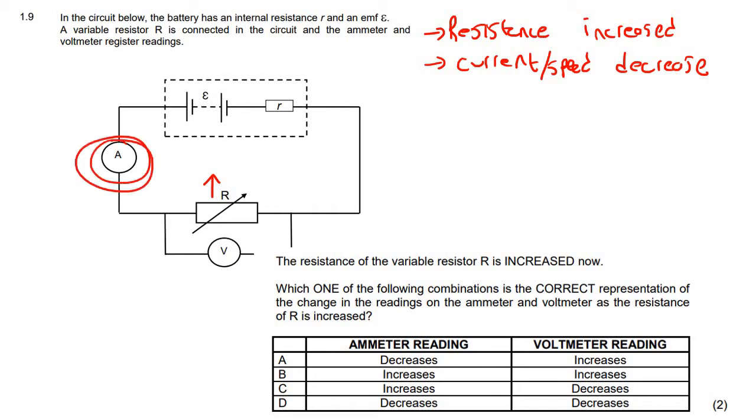So the ammeter reading, which is the thing that we use to measure current, that is definitely going to decrease. So the answer cannot be this one, and the answer cannot be this one, because there they're telling us that the current is increasing.